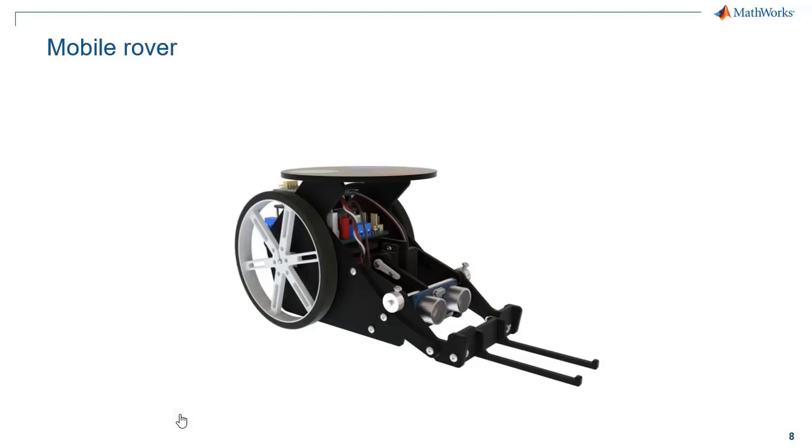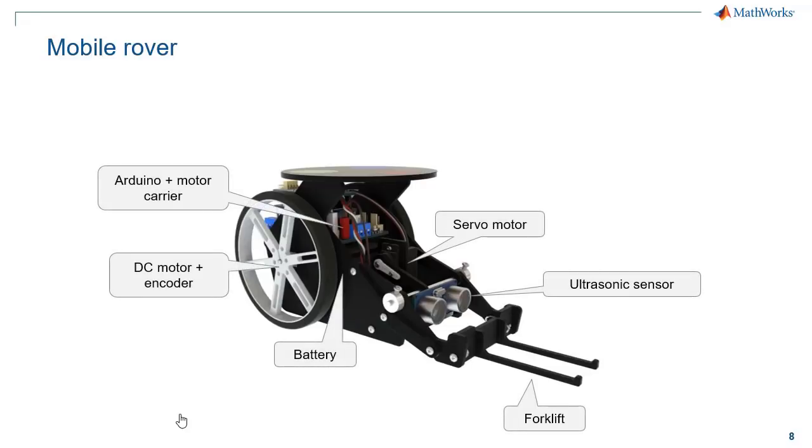So here's our mobile rover. And again, I'll use this example mainly as a high-level introduction to Simulink. So here are the key components of this robot. So the main things to know are that it's powered by an Arduino, and it's what we call a differential drive robot. And that basically means that each wheel can be operated independently using separate DC motors. It also has a servo motor to operate its forklift and an ultrasonic sensor to help it see its surroundings, but I'm really not going to use those today.